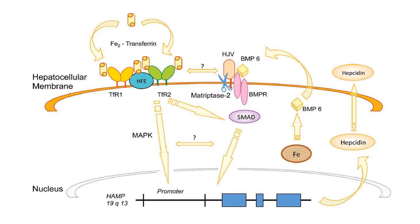Understanding this mechanism allows us to understand the pathogenesis of hereditary hemochromatosis. In normal conditions, iron excess triggers a feedback mechanism that restricts iron. In hereditary hemochromatosis, a defect occurs anywhere in this feedback mechanism, leading to loss of feedback inhibition, so iron increases without control, resulting in iron overload and hemochromatosis. The most common defect occurs in the HFE protein, but defects may also occur in transferrin receptor 2, hemojuvenil, the HAMP gene itself, or ferroportin.